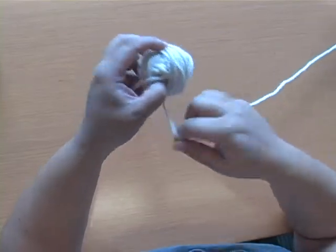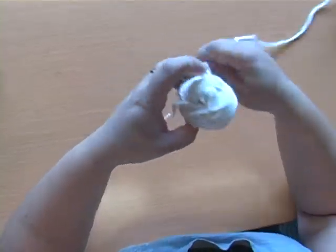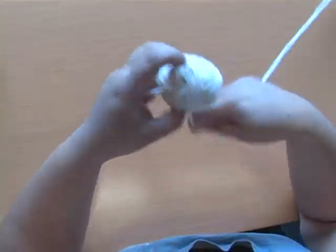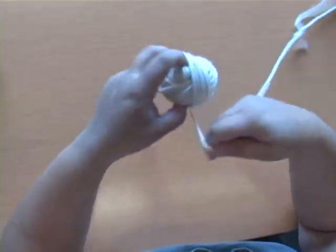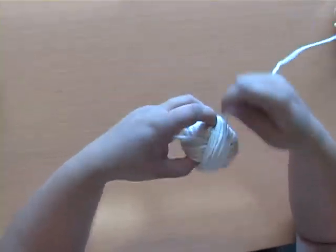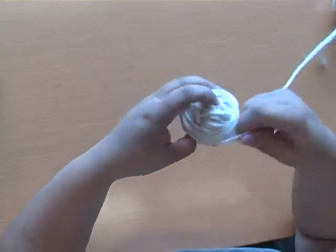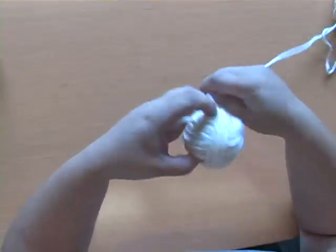If you wrap over that end too tightly, then you won't be able to pull the yarn out from the center. It'll get stuck because that figure eight yarn tends to get tangled in the middle. So you need a big enough hole that you can pull out those tangles if you need to.